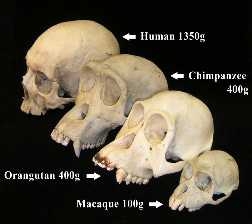Biological anthropology, also known as physical anthropology, is a scientific discipline concerned with the biological and behavioral aspects of human beings, their related non-human primates and their extinct hominin ancestors. It is a subfield of anthropology that provides a biological perspective to the systematic study of human beings.